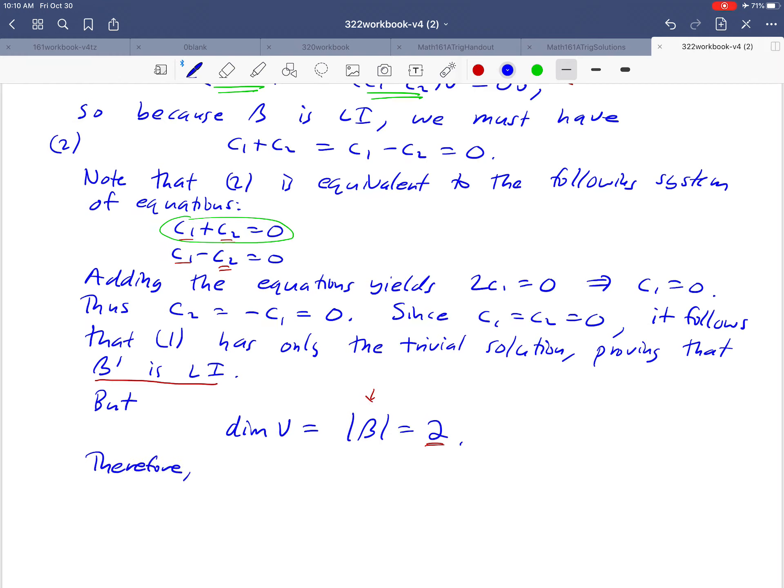Therefore, since β' is linearly independent and contains exactly two vectors, which happens to be the dimension of our vector space, it follows from theorem DF4 that β' is a basis. By remembering this fact, we were able to spare ourselves the trouble of directly showing that β' is a generating set.